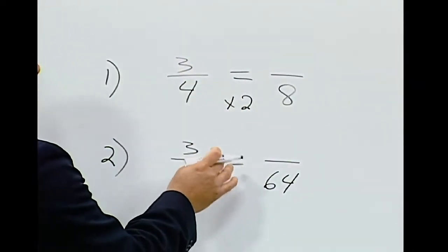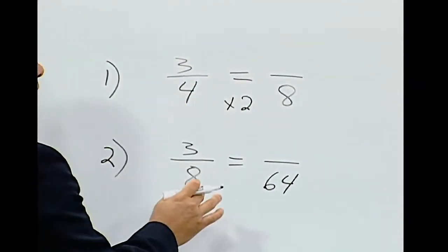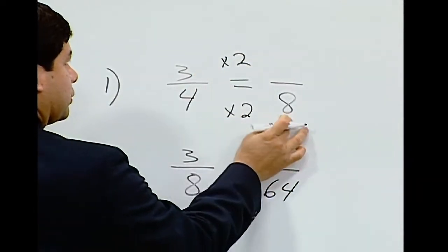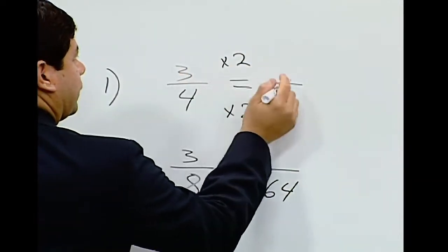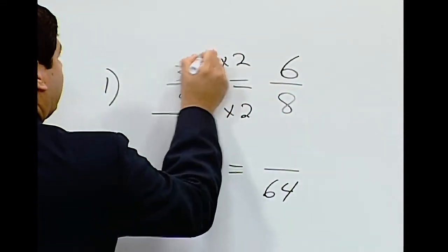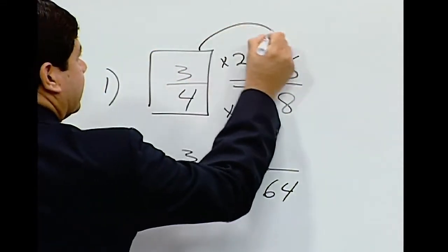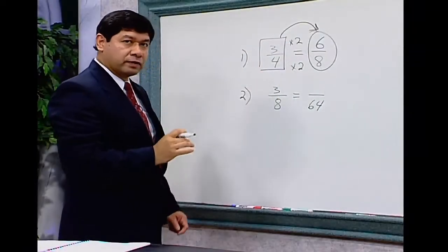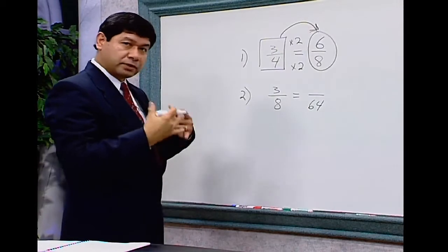So whatever we multiply by our denominator, we also have to multiply by our numerator. 4 times 2 equals 8. 3 times 2 equals 6. So we know that 3/4 raised is equal to 6/8. These are equivalent fractions. They're equal to the same amount.